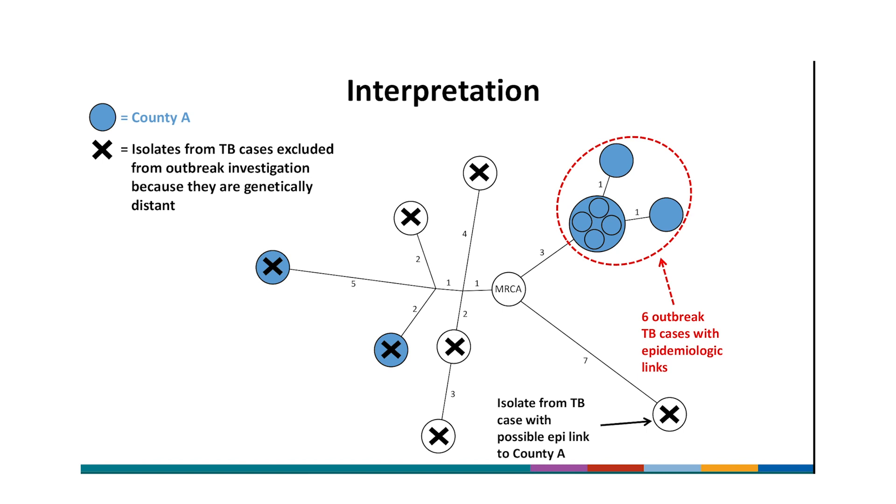In this example, seven cases, the ones whose isolates are marked by an X, could be excluded from the investigation based on genetic distance of 7 to 10 SNPs from the outbreak cases and no previously identified strong epidemiologic links. Two of the cases we excluded from further investigation lived in County A. If not for WGS results, we likely would have been concerned that they were likely linked to the outbreak or to each other and would have been barking up the wrong tree to look for links that did not exist. We had identified a case with a possible but weak epi link to County A. This is the isolate on the lower right that we could also cross off our list as needing further investigation in this outbreak. Excluding all the clustered cases outside of County A helped us avoid what would have been a large and labor-intensive multi-jurisdictional outbreak investigation.